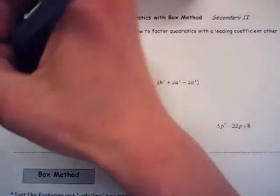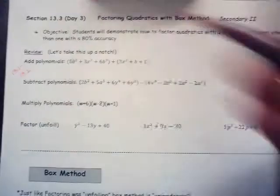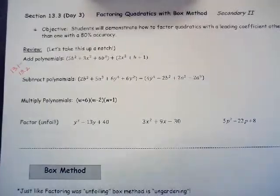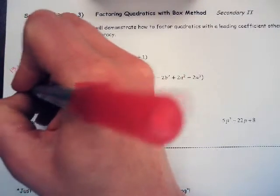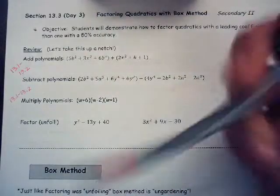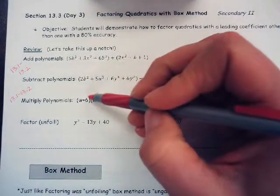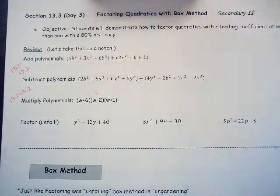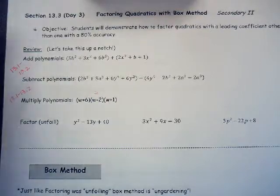Adding polynomials and subtracting was the 13.1 and 13.2 video. Multiplying polynomials — we did one with three of them — that was also the 13.1 to 13.2 video. For that one, you just foil the first two and then foil that result with the last one. That's a little bit of a challenge problem — if you're in my class, you might see something like that on something important, just FYI.